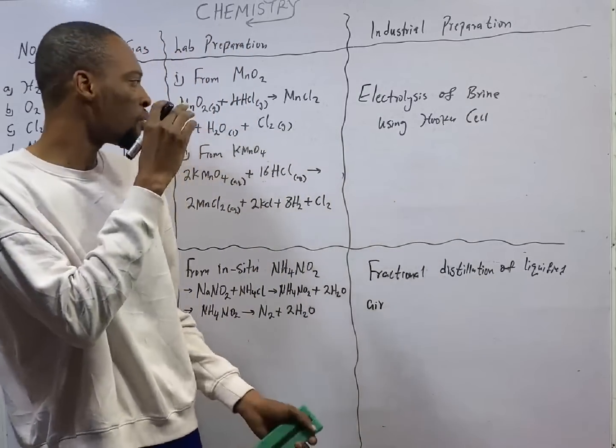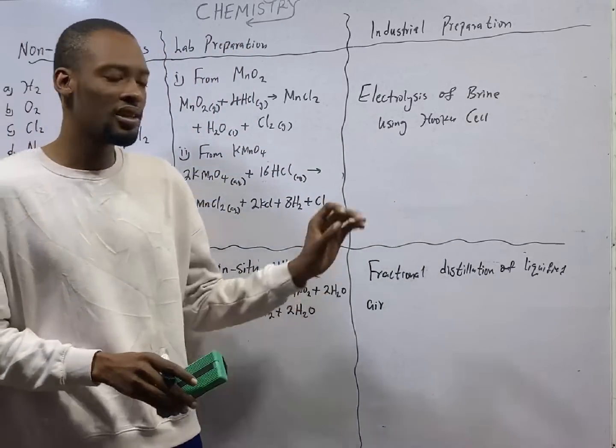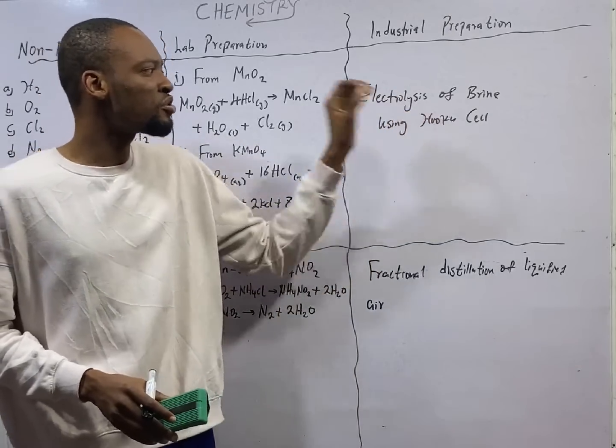Any time you see MnO2 or KMnO4 reacting with HCl, just know that one of the products will be chlorine gas.